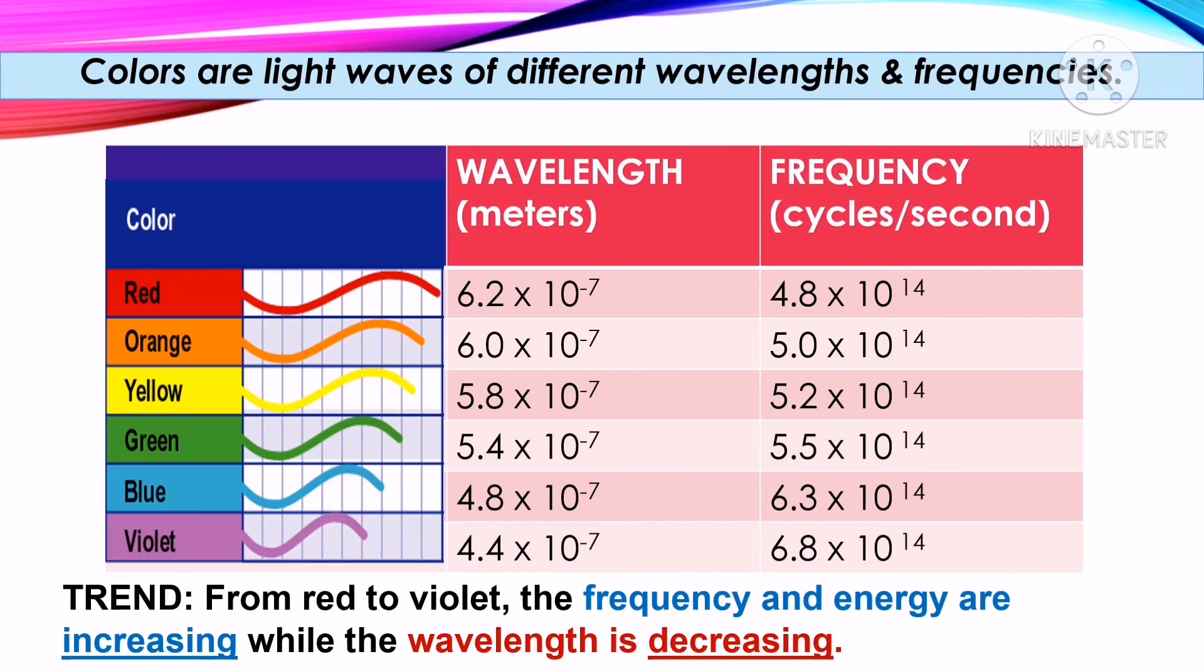Colors are light waves of different wavelengths and frequencies. What is the trend? From red to violet, the frequency and energy are increasing, while the wavelength is decreasing.